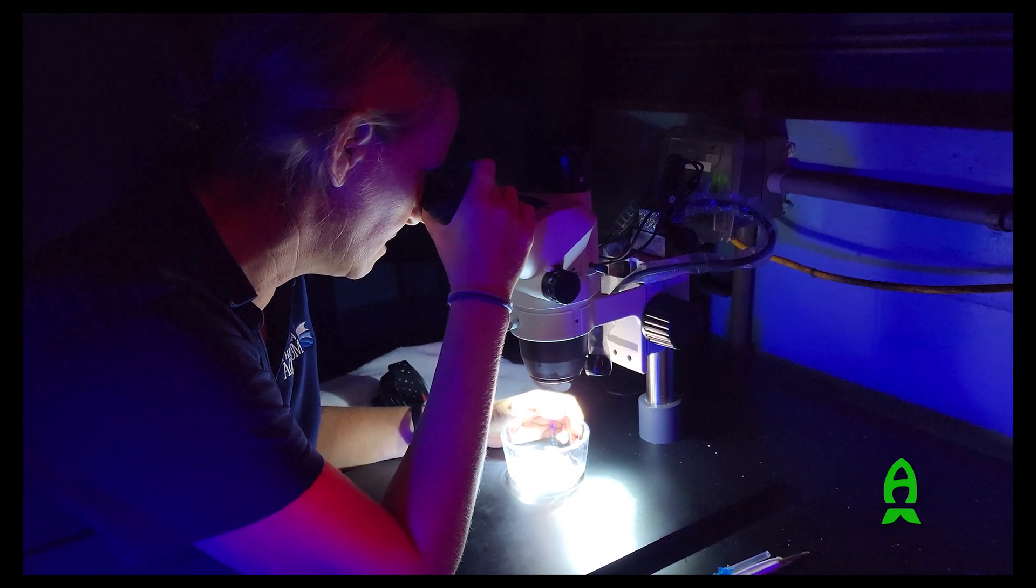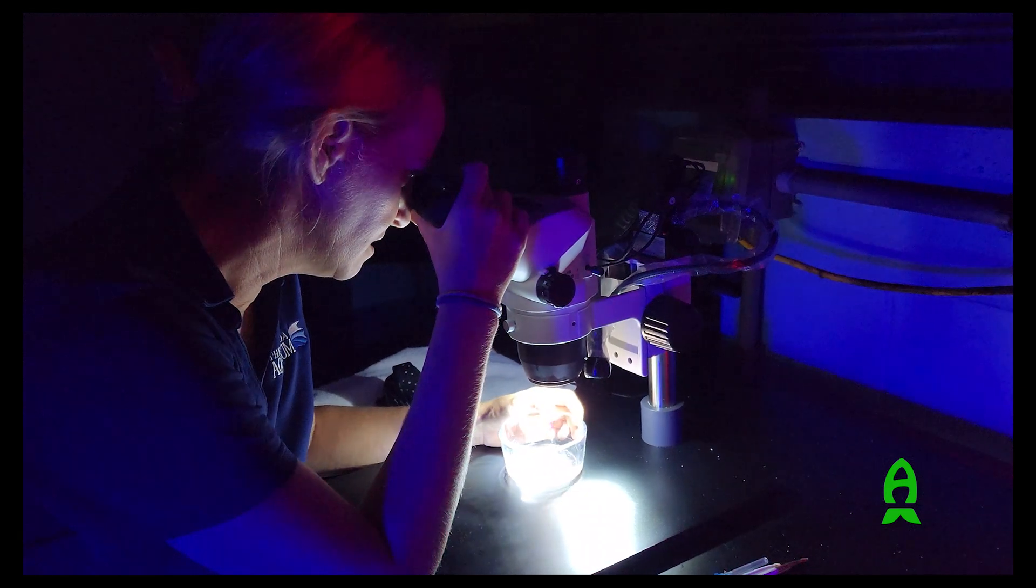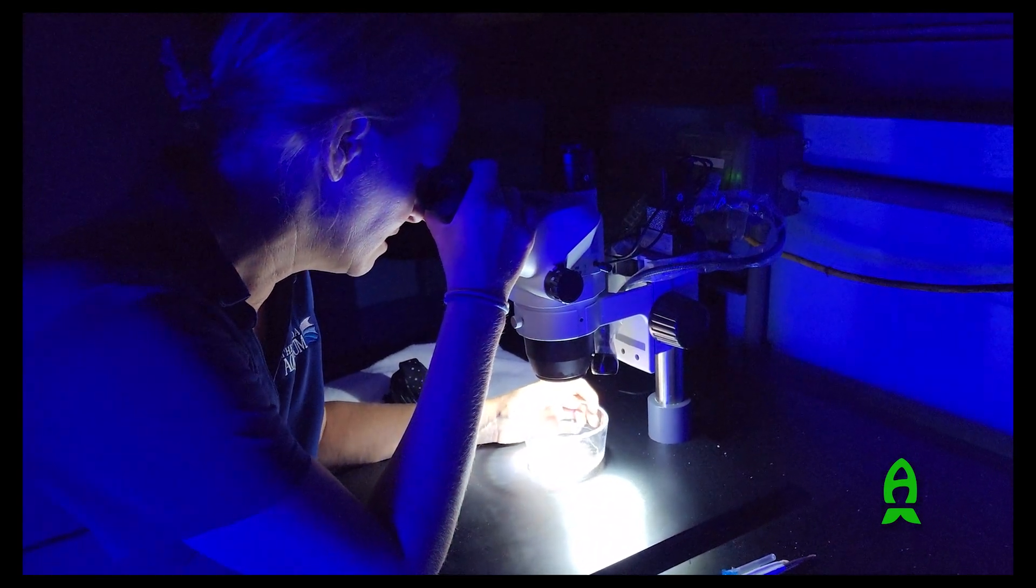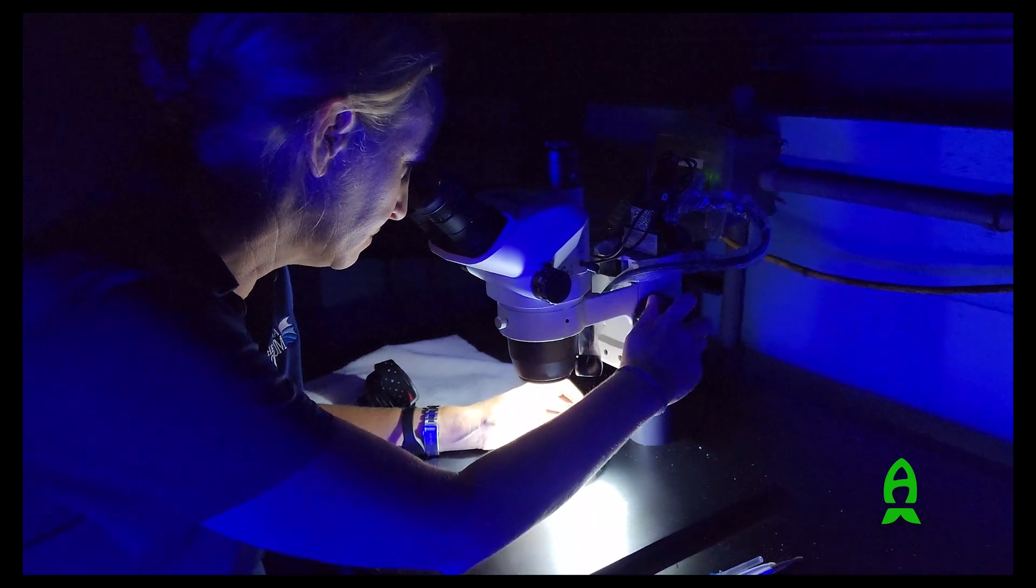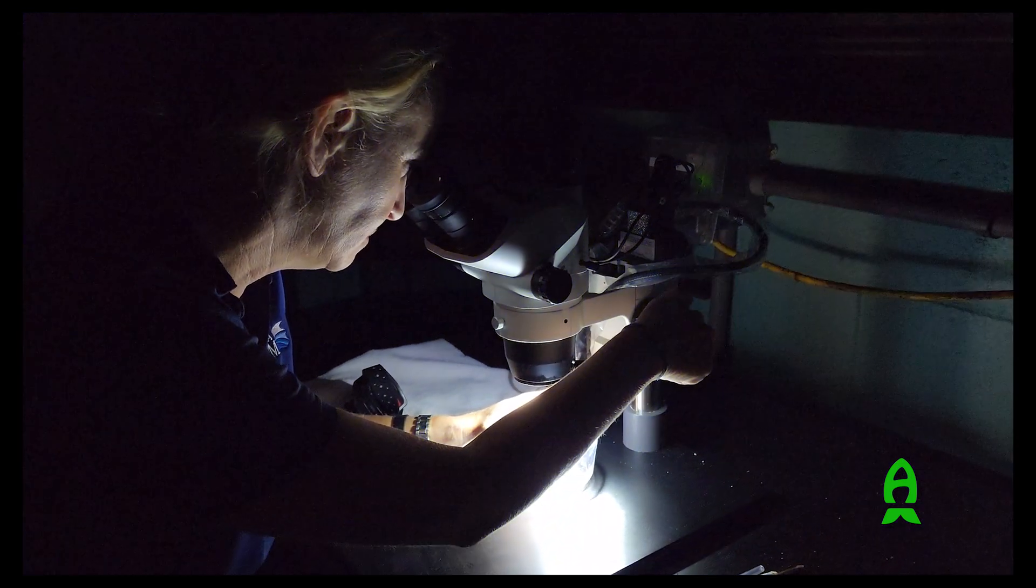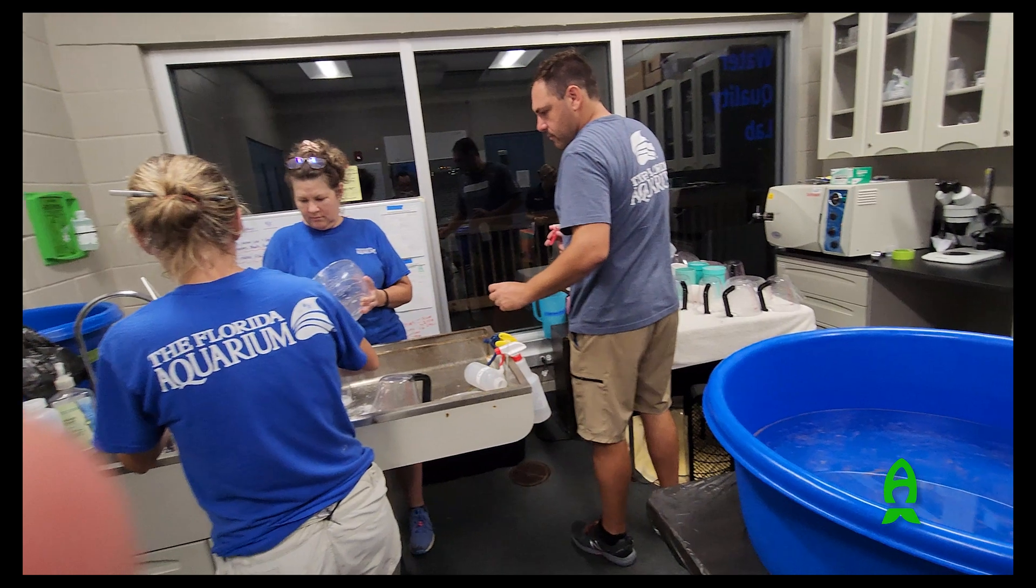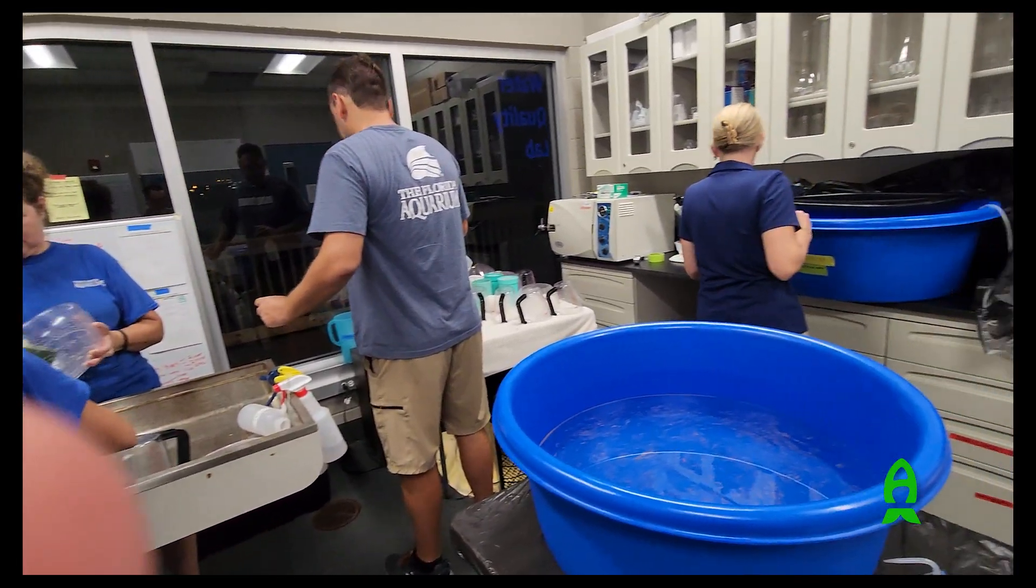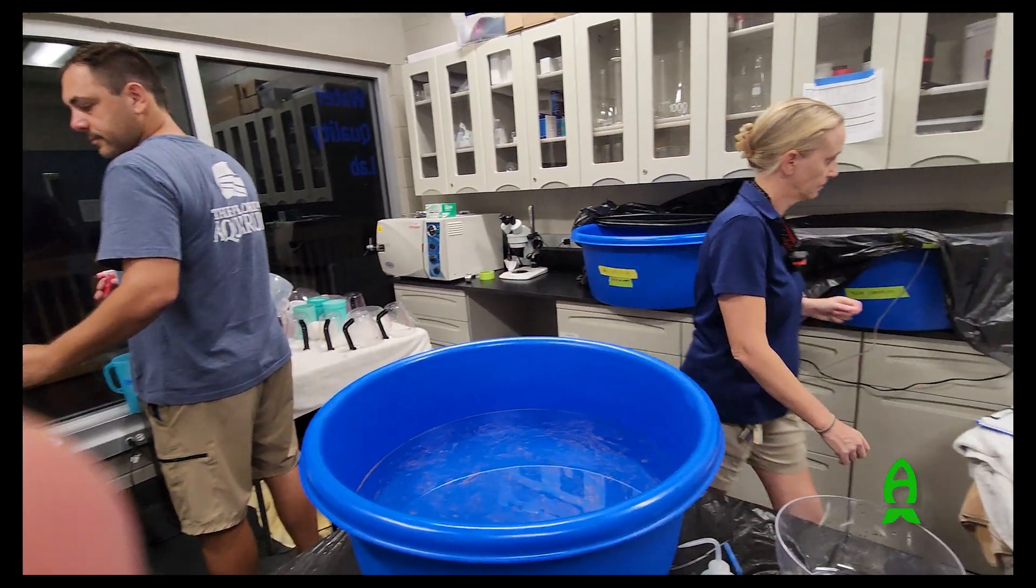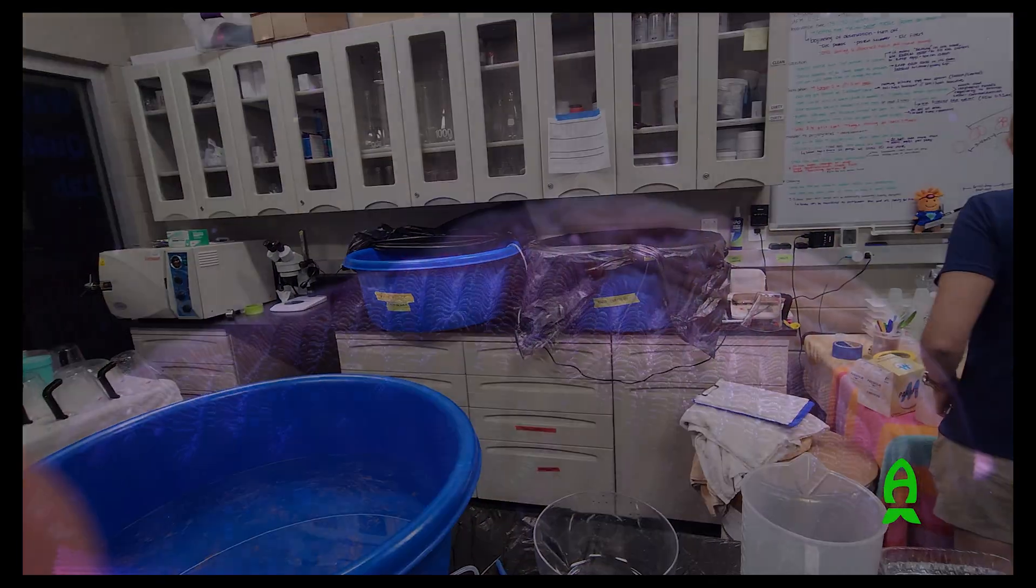So in the lab, one thing that we're checking for is our fertilization rate. So we'll take a subsample of about 100 to 200 eggs and we'll check how many of those have started to divide. And if we're having a good night, it'll be 90 to 95 percent, sometimes even more of those eggs will actually be fertilized and dividing. And that just means that you have a really healthy culture and that you're not going to be dealing with a lot of breaking down unfertilized eggs that tend to contaminate the culture and make things a lot more difficult over the next couple of days.